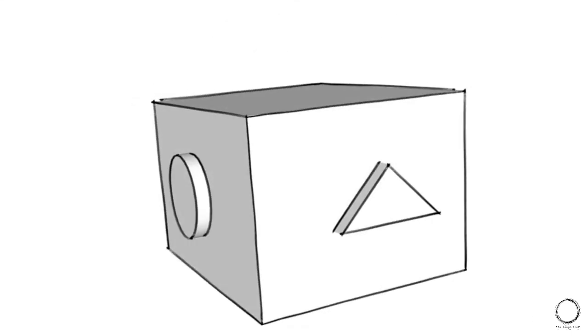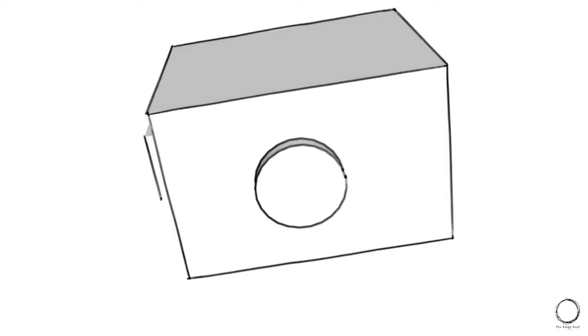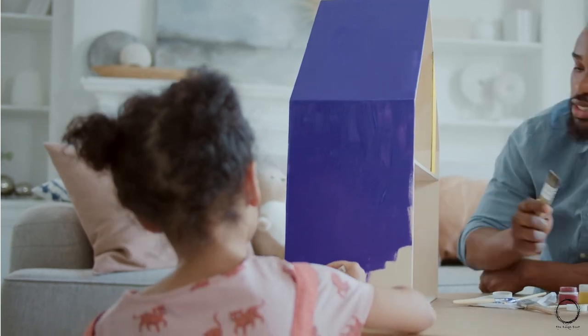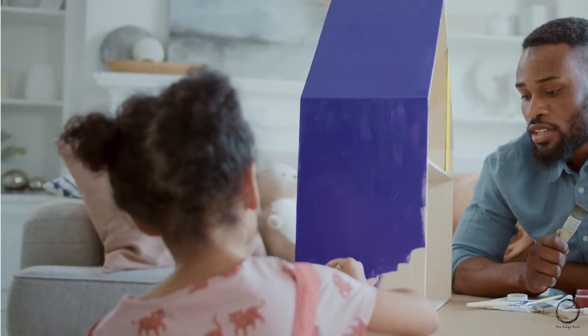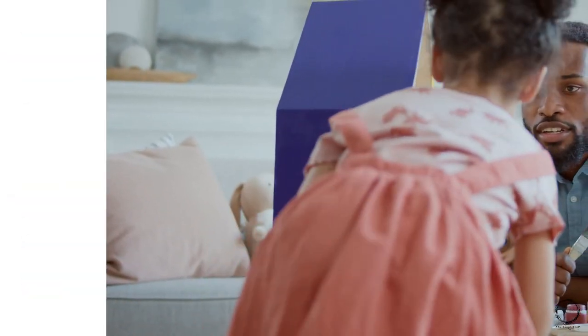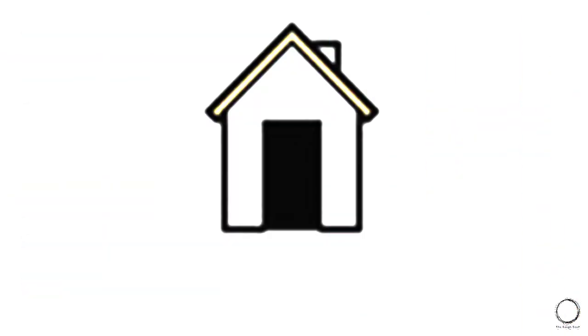Now let's understand how a point, a line, a plane, and a volume are converted into a three-dimensional orthographic projection. We'll use the example of drawing a house, as it's the first thing we learned to draw. Starting with converting this 2D plane of a house to its 3D form and looking at all sides of the volume, beginning with the top view.